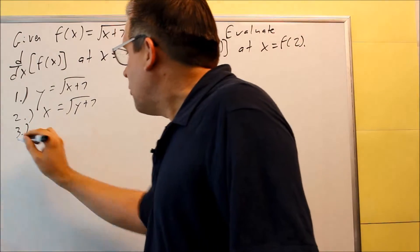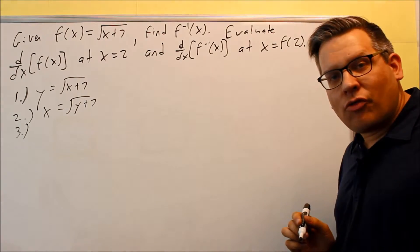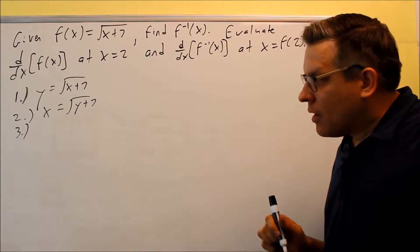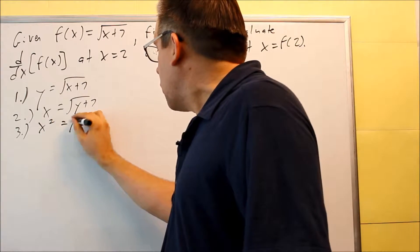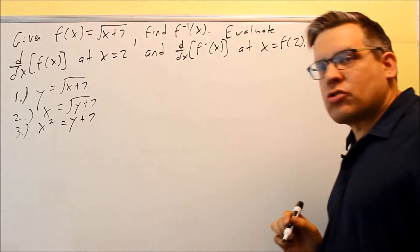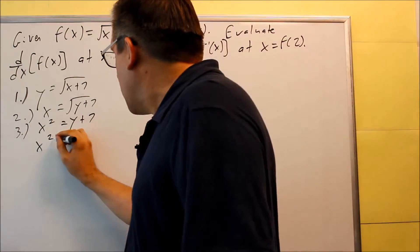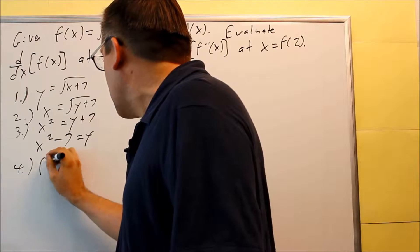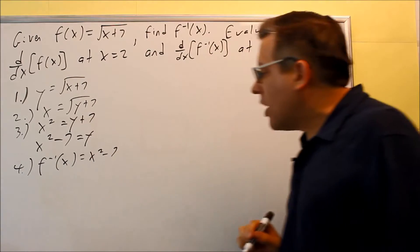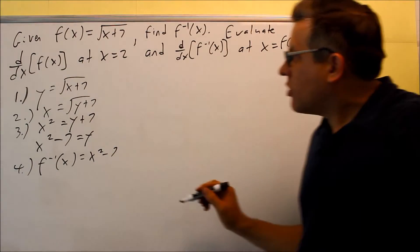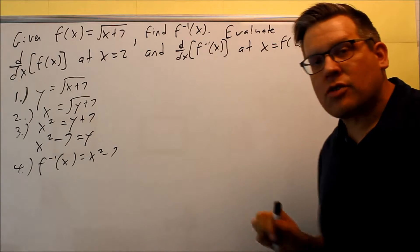Step three from the notes says solve for y. We're going to square both sides: x squared equals y plus 7. Subtract 7, so x squared minus 7 equals y. For step four, your inverse is going to be x squared minus 7. That's the first thing they want you to find.